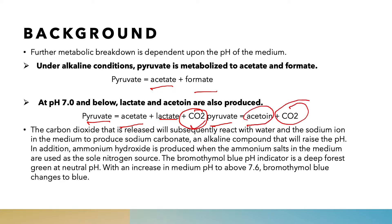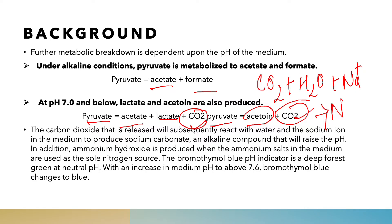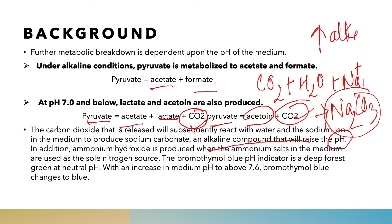Carbon dioxide produced in the process will react with water and sodium ions to form sodium bicarbonate or sodium carbonate. Sodium carbonate is an alkaline compound, which will raise the pH of the medium to alkaline conditions. The main point is that if the bacteria grow in the medium, by any condition the pH of the medium is going to be alkaline.